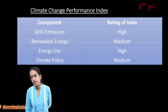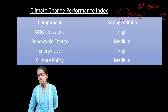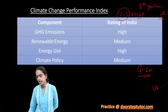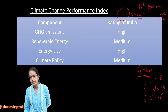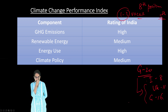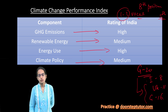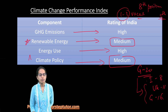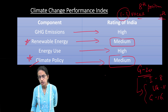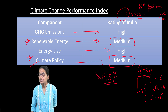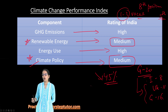The Climate Change Performance Index is a very important topic. India attained eighth position, which is remarkable because the first three positions went vacant — making India technically fifth. No country from the G20 was above India. India is at 8th, UK at 11th, Germany at 16th. For India's rating: greenhouse gas emissions are high, renewable energy is medium, climate policy is medium, and energy use is high. Under the Paris Agreement, India committed to reducing emission intensity to 45% of GDP and achieving 50% cumulative installed power from non-fossil fuel sources.